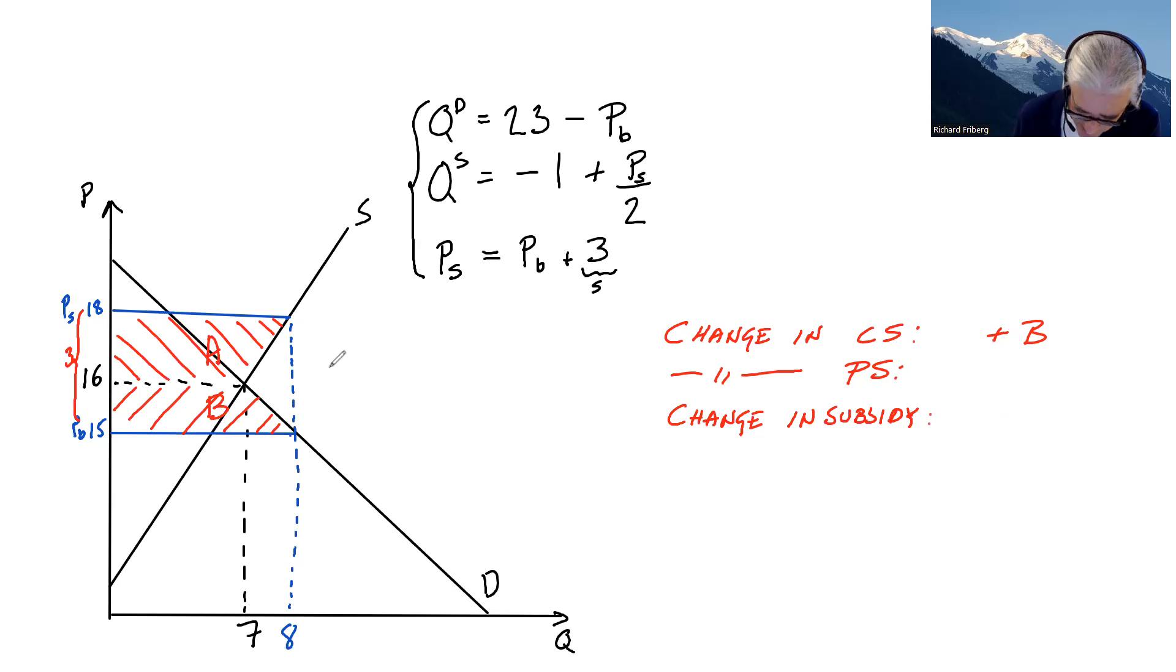Let's say before we do that, we should write that the change in producer surplus was plus A. Here the change in subsidy, 24 euros, or the entire rectangle here. The subsidy times the quantity, A plus B plus C. That's the cost to the government of the subsidy.